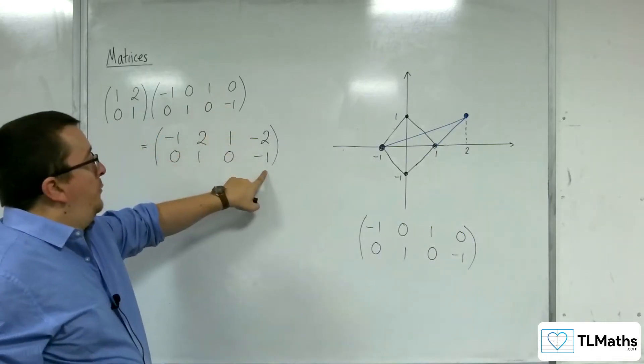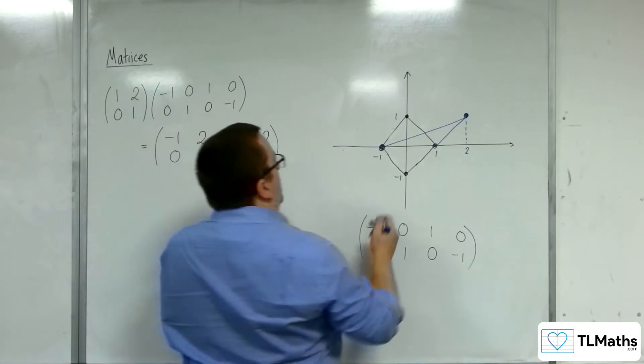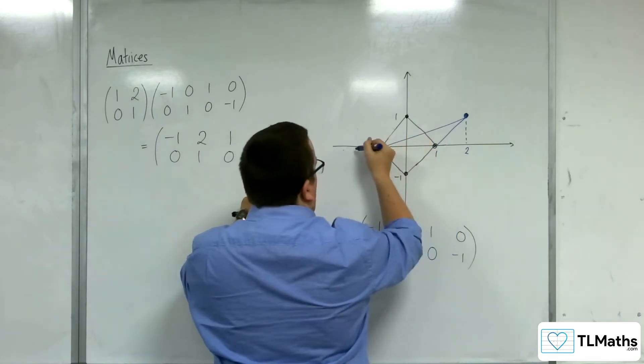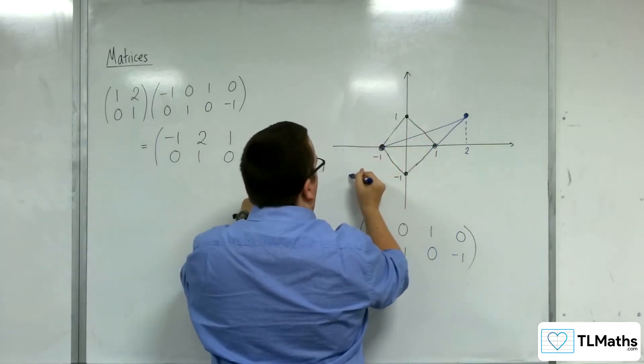0, minus 1 became minus 2, minus 1. So negative 2, negative 1, so somewhere over here.